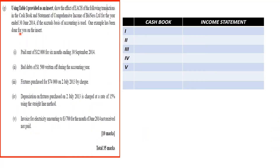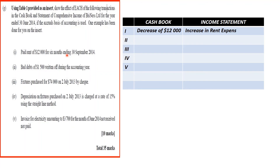Using the table provided, show the effect of each transaction on the cash book and statement of comprehensive income for the year ended June 2014, using the accrual basis of accounting. One example has been done. Pre-paid rent of six months to September 2014 was the example done, showing a decrease in cash of $12,000 and an increase in rent expense of $6,000 on the income statement.